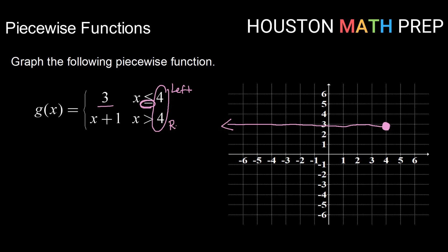Now to graph the right piece, we're going to graph the graph of x plus one. But we're going to start the graph at four. So if I were to replace four for x, four plus one tells me I'm going to begin at the point four five.